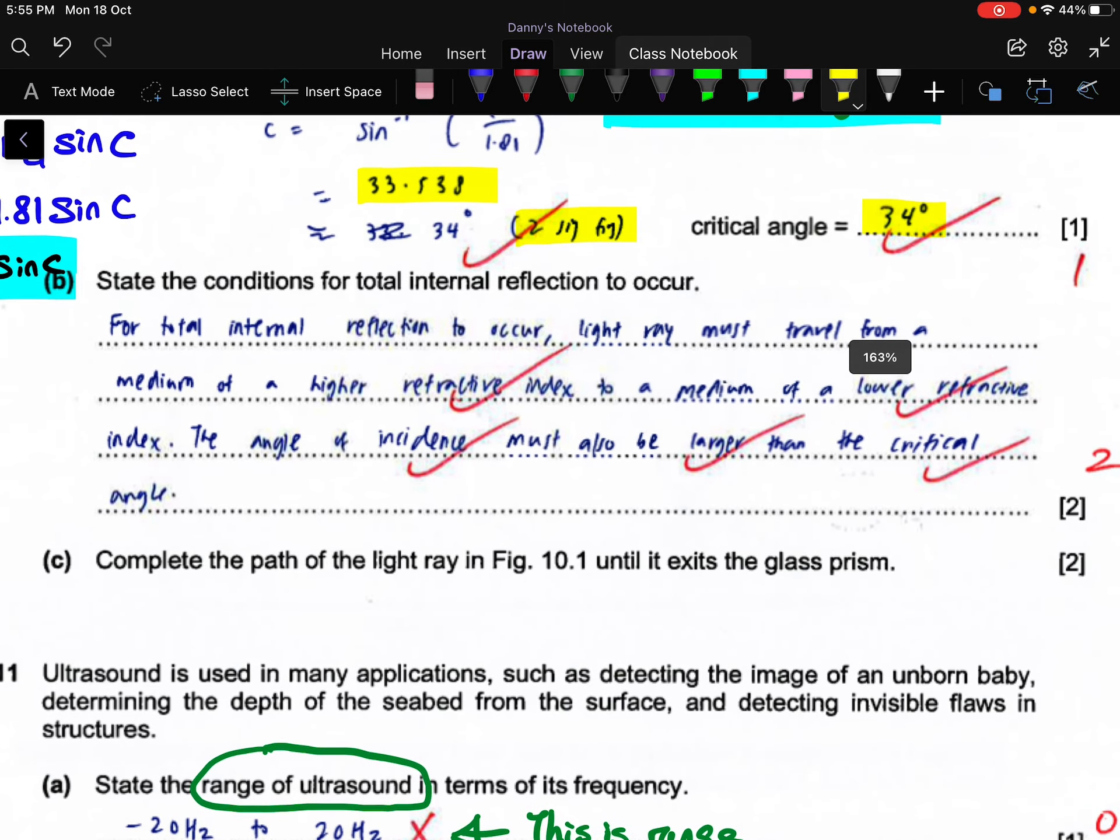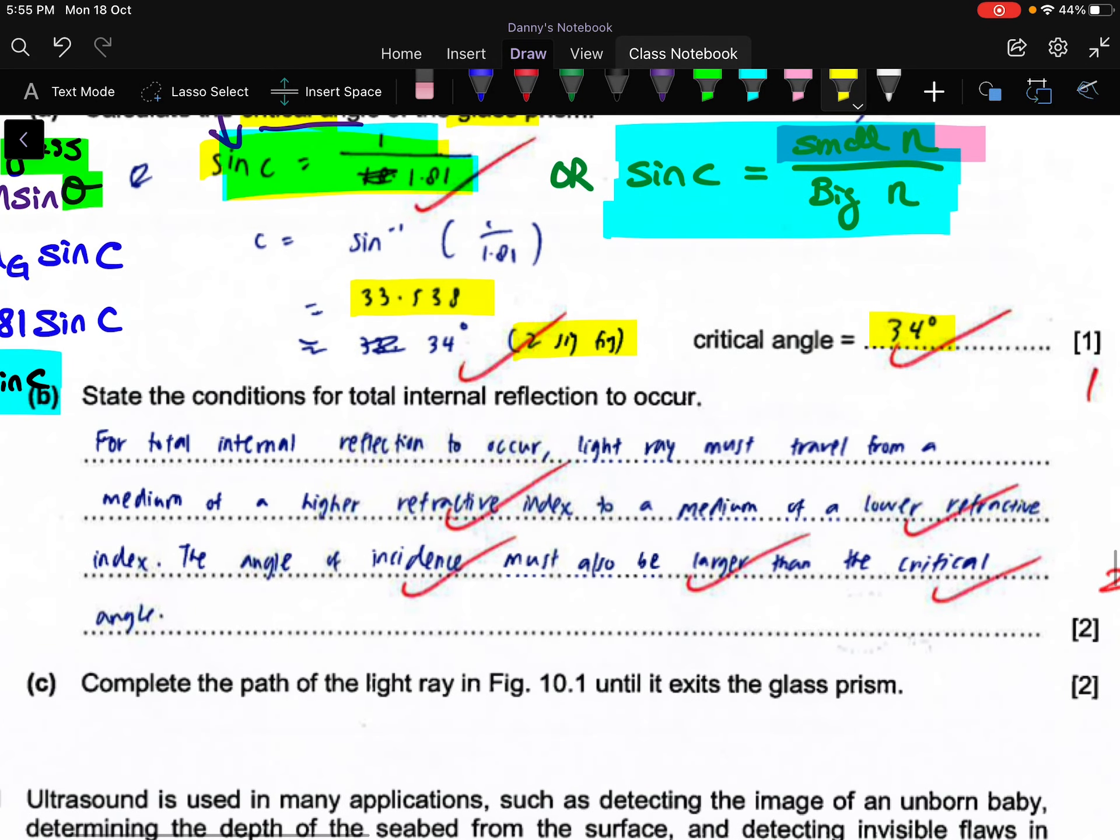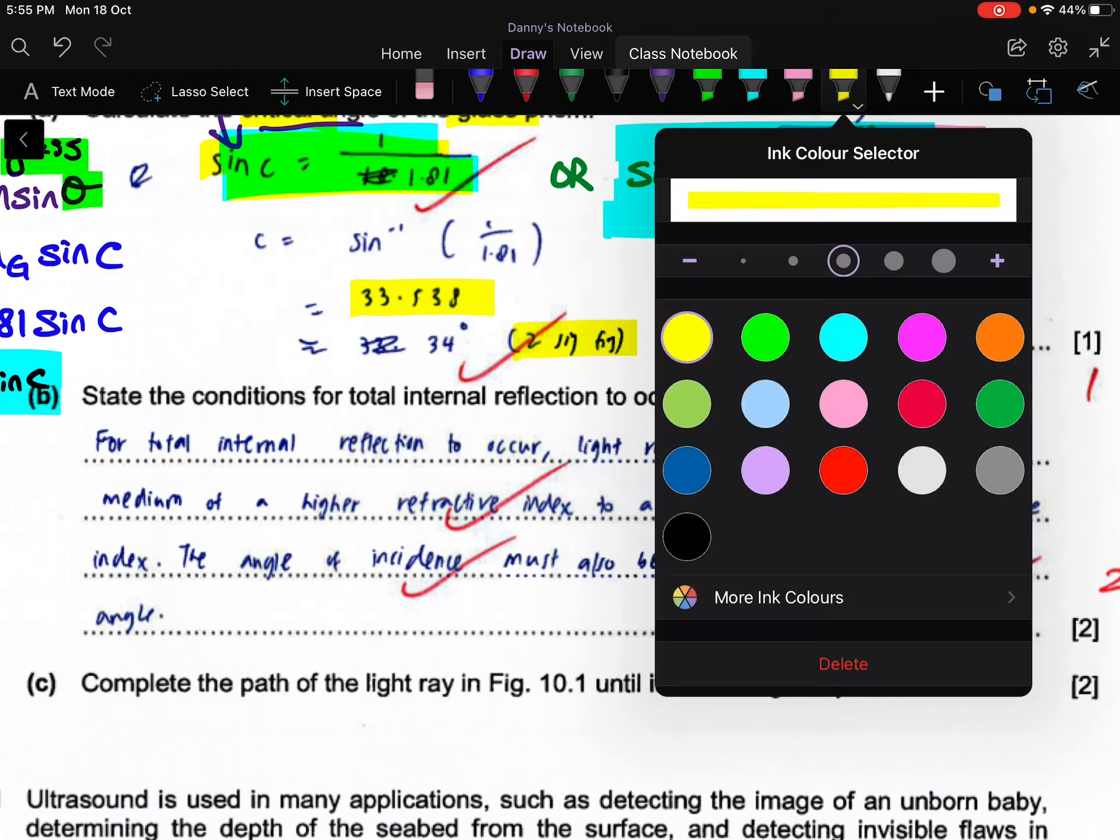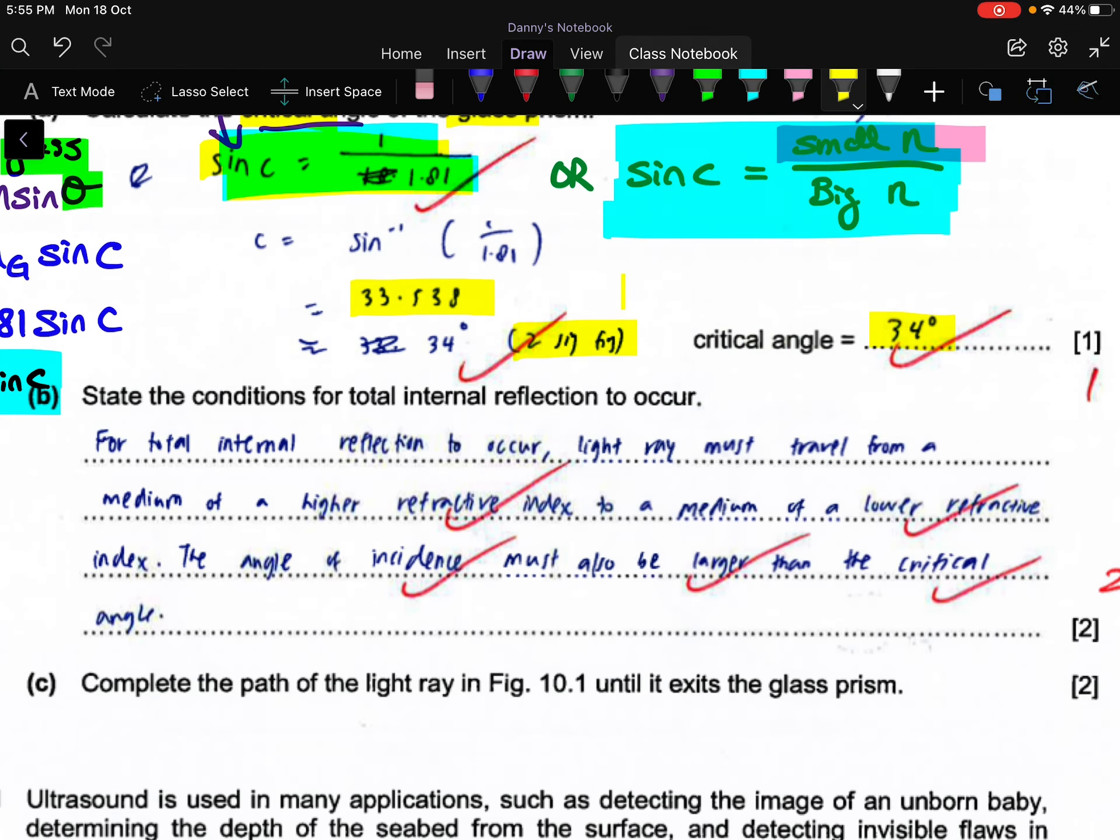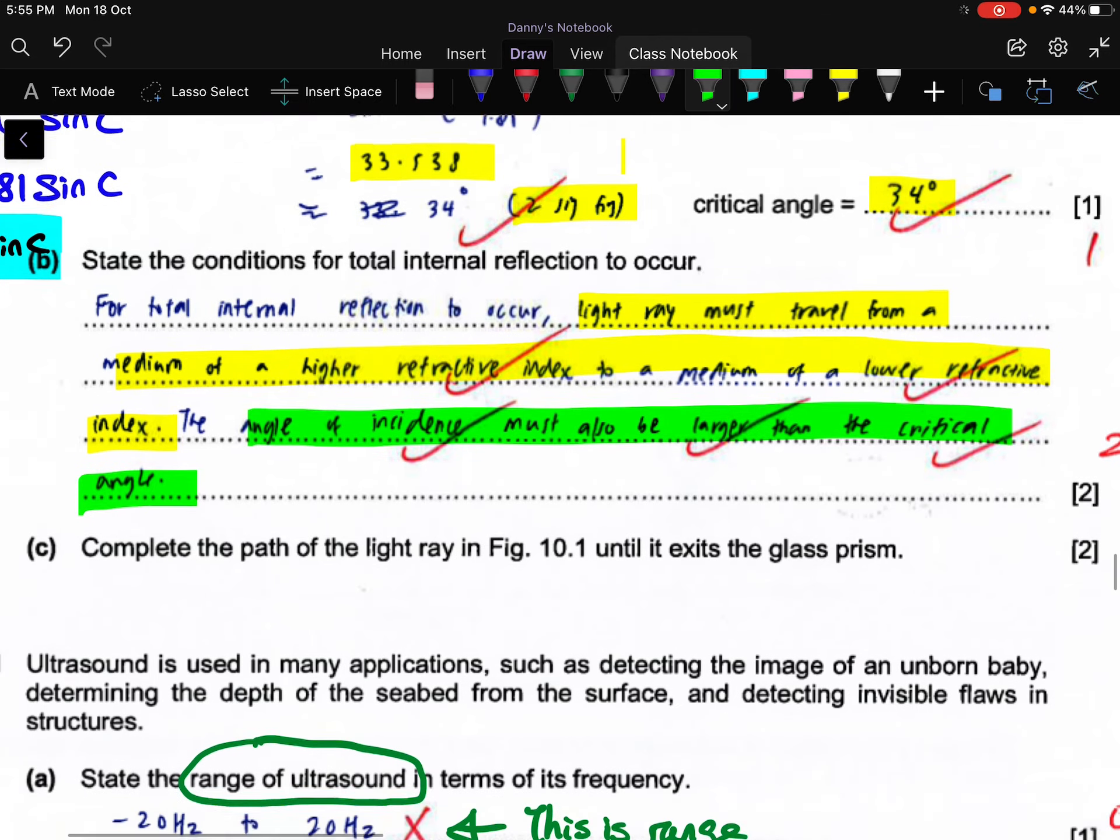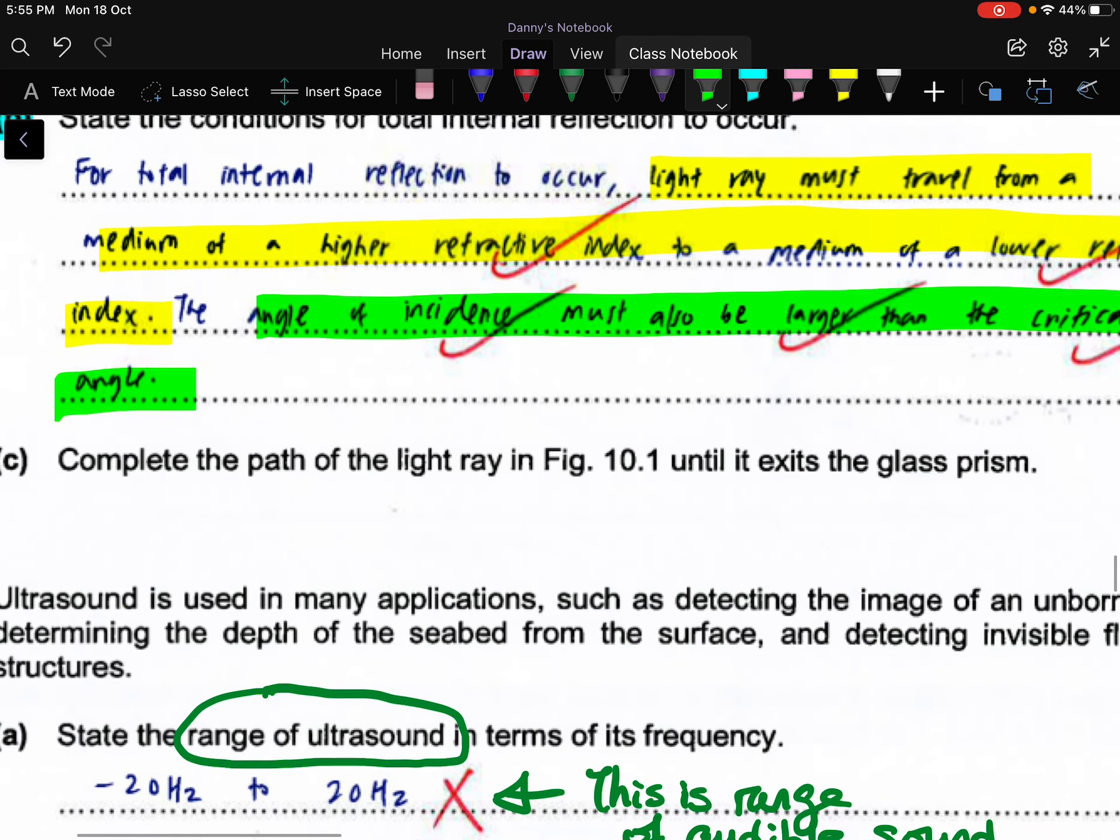For part b, conditions for total internal reflection - as you can see here, the candidate did study. Very well, the light must travel from a medium of high refractive index to a low refractive index. Very good, first mark. The angle of incident must be larger than the critical angle. You'll get the two full marks there.